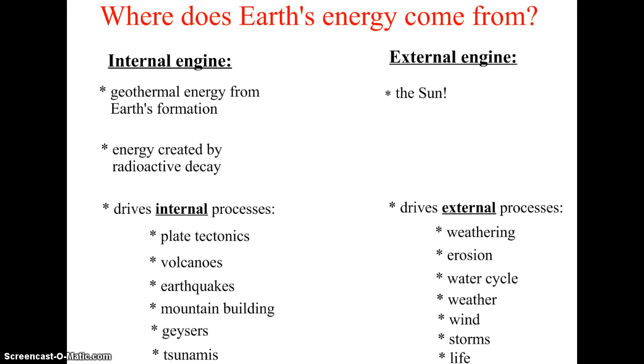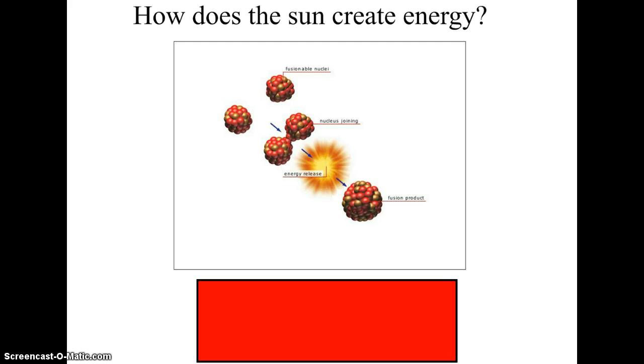Now, during this unit, we're really going to be focused on energy from the sun. So in class tomorrow, we're going to talk about how stars, including our sun, create energy. And just to give you a quick idea of how this happens, it happens in the process that you're seeing on the screen. Basically, what happens is in stars, atoms are fused together. They're joined together. And when that happens, energy is released.